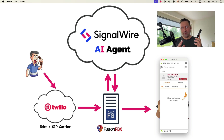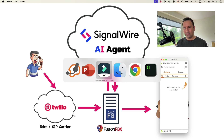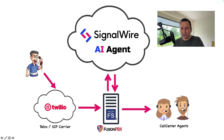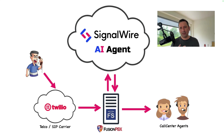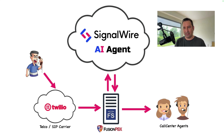So what is the scenario here? I have a customer that calls a contact center. I'm sending the call to an AI agent. Here I'm using SignalWire because I really like how they work — the team and everything about them. So the call will be sent to the SignalWire AI agent, which will answer the call and based on what the customer wants, it will transfer to local call center agents registered in FreeSwitch, or here I'm using FusionPBX.